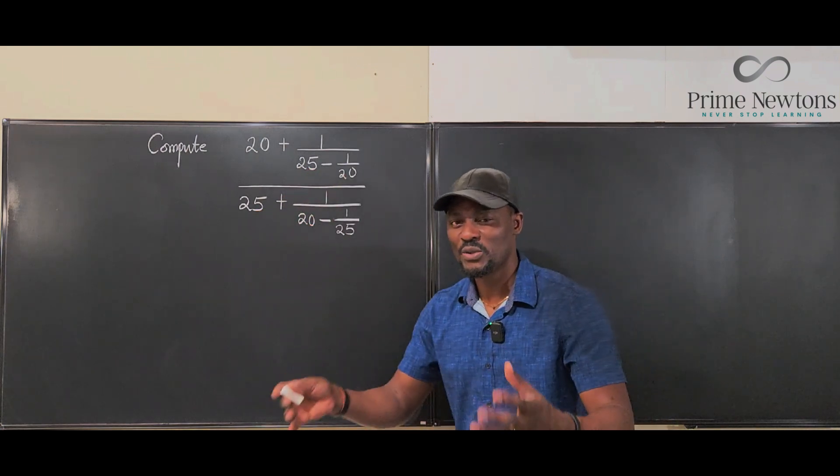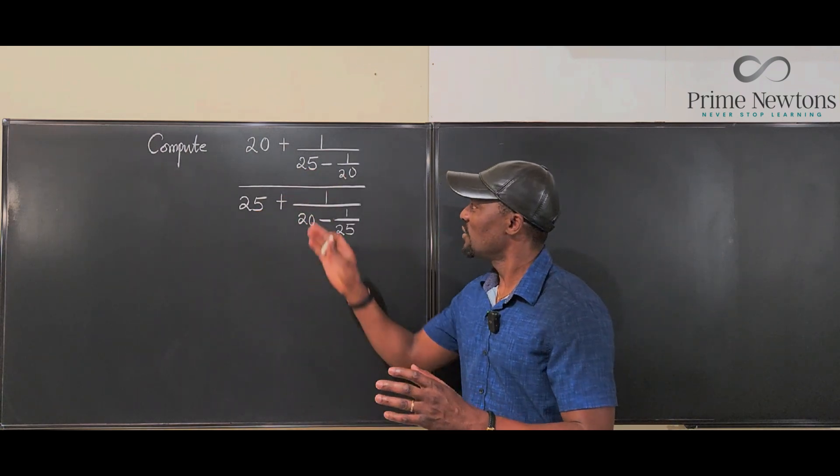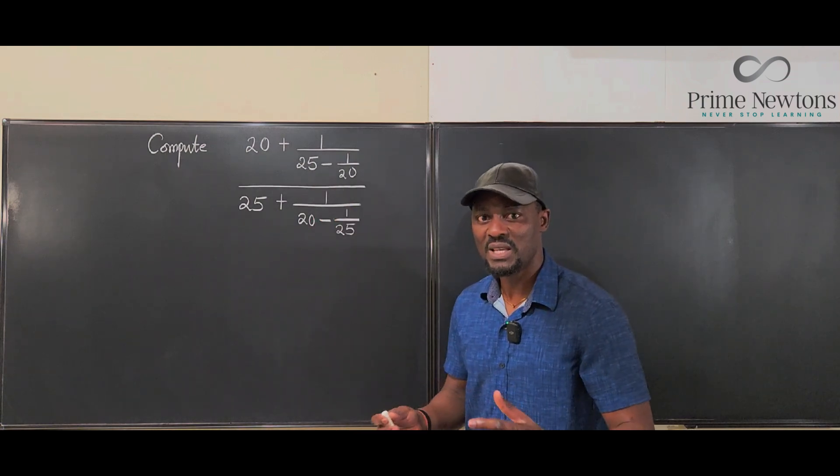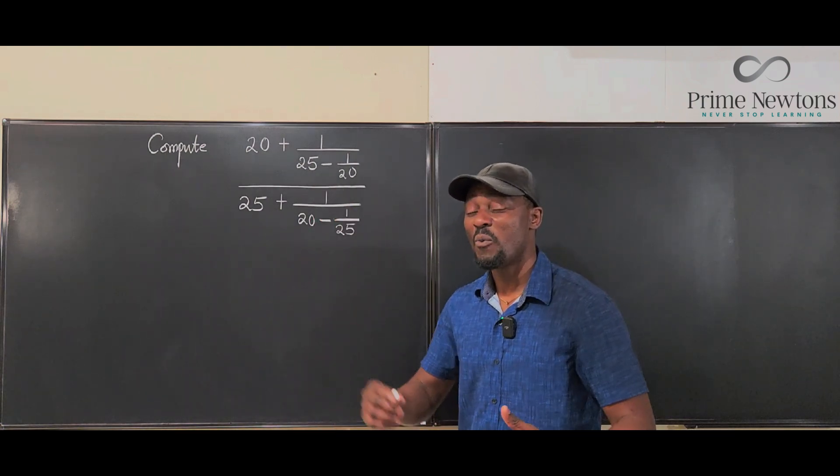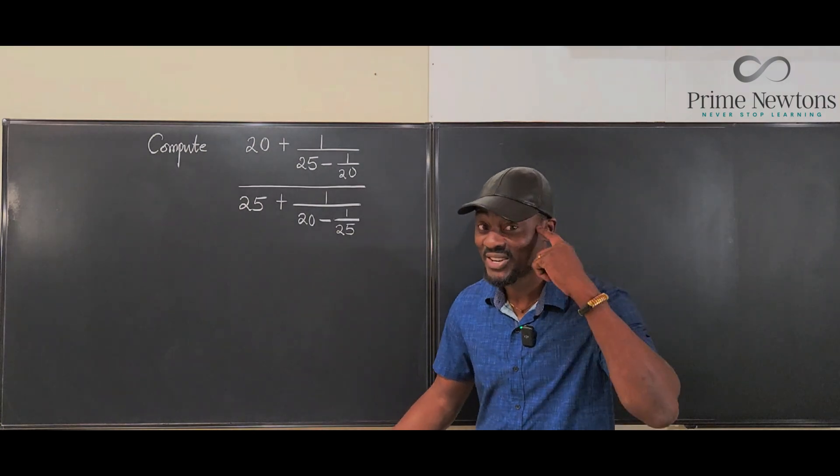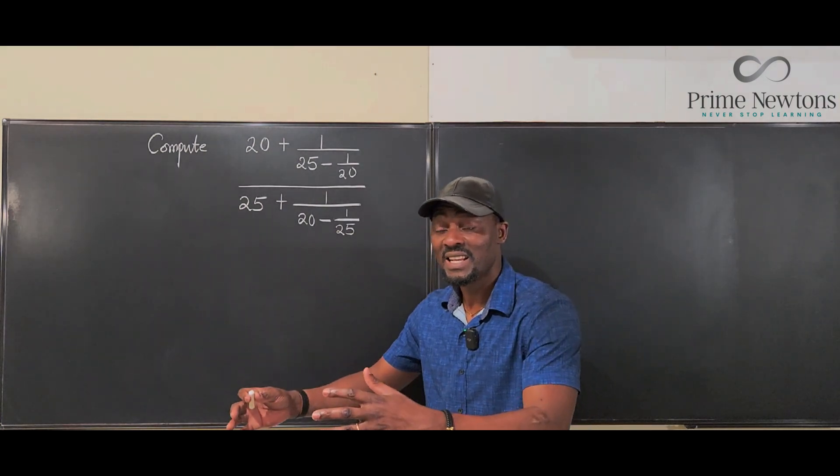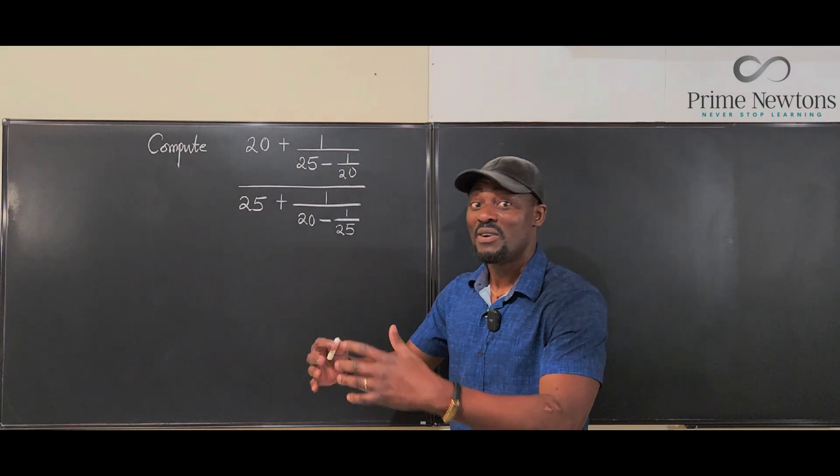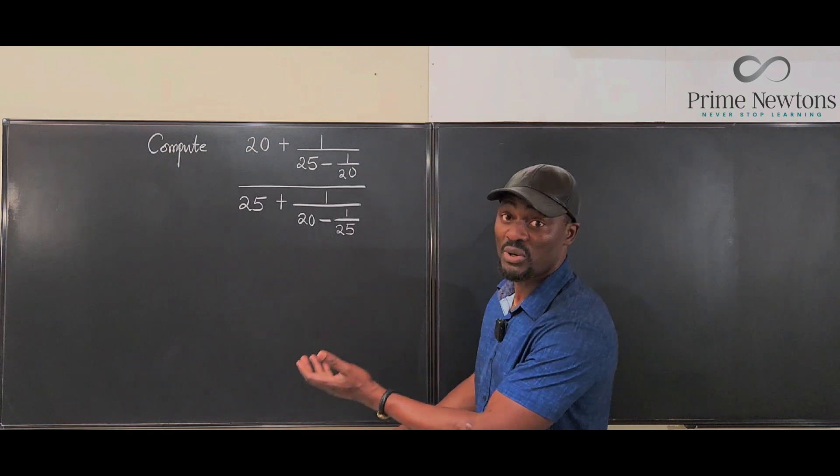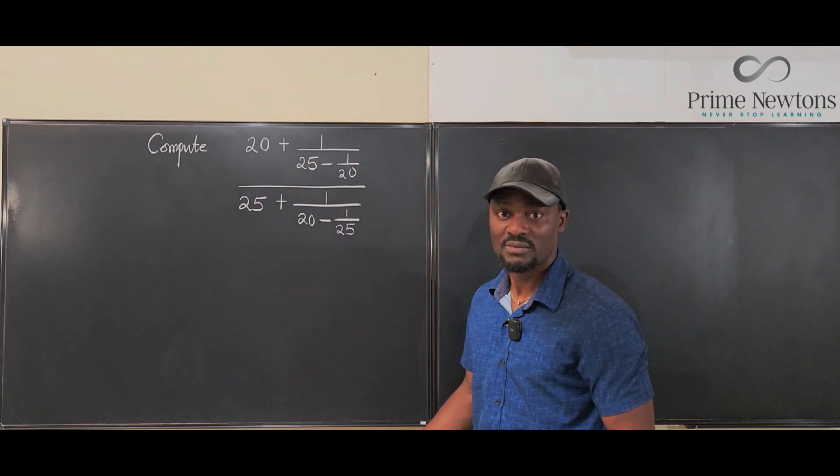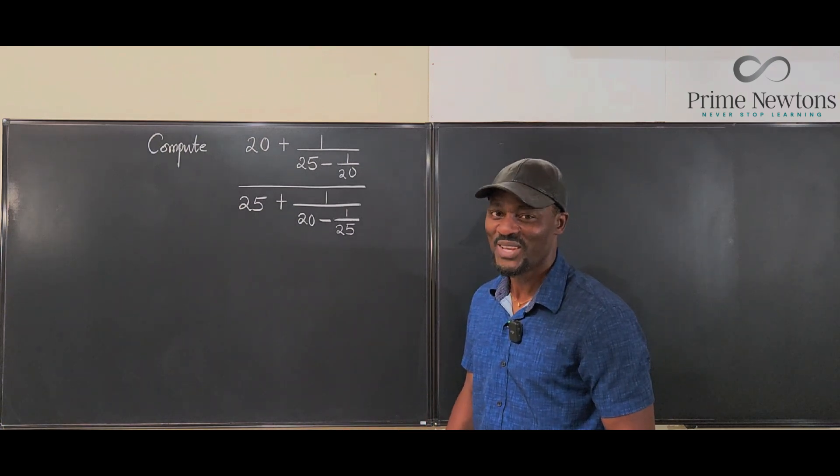You might as well go the algebraic way and represent 20 with A, represent 25 with B, and see what comes out when you just do the algebra. Because it's faster. Maybe at the end, you might just get a very simple expression where you can plug in 20 and 25 into. And that's exactly what we're supposed to do.